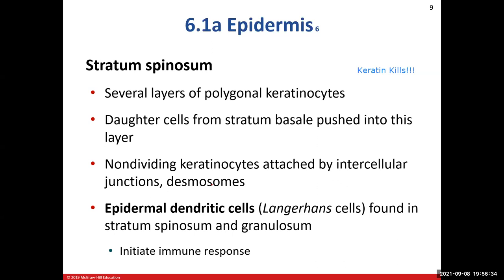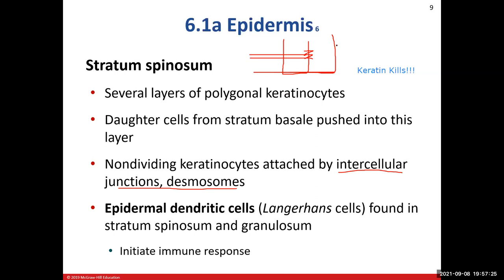The second layer is the stratum spinosum, which is superficial to the stratum basale. This is where those daughter cells wind up — they get pushed into this layer. At this point the cells go out and socialize with one another, creating intracellular junctions and desmosomes — basically, these cells tightly pack themselves together, preventing things from moving in between the cells, which protects against pathogens, water, and other fluids from the external environment.